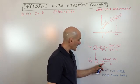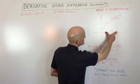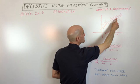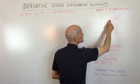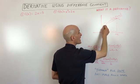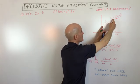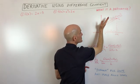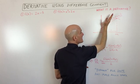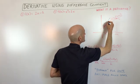As h approaches zero, we're doing a limit. What that means is this distance is getting smaller and smaller, so this point is moving along the curve until these two points actually coincide. The difference between these points is getting smaller until you're getting not the average rate of change, but the instantaneous rate of change.